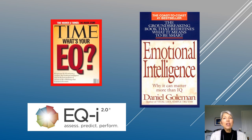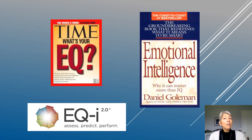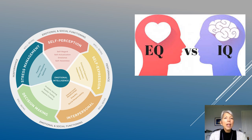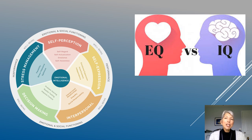This is where the confusion begins. There are two major ways in which EQ and EI differ: first, how they are defined, and second, how they are measured. Let's start with the first difference, how they are defined. EQ, or emotional quotient, includes lots of different skills and traits, including self-awareness, well-being, optimism, and social skills.